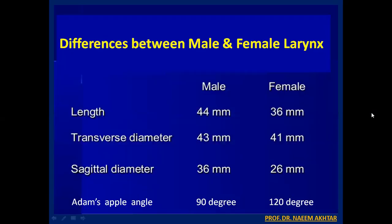The differences between male and female larynx: the male larynx is 44 mm in length whereas the female larynx is 36 mm. The transverse diameter is 43 mm in males and 41 mm in females. The sagittal diameter is 36 mm in males and 26 mm in females. The angle of the Adam's apple is 90 degrees in males and 120 degrees in females.